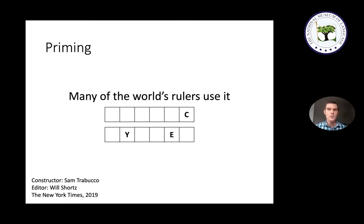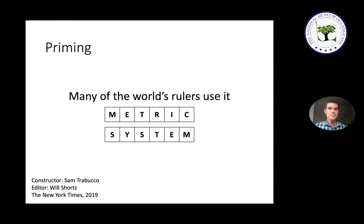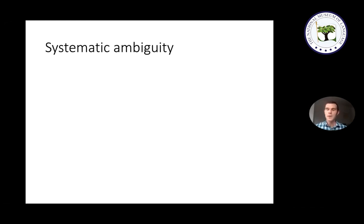Another example of priming is the clue 'Many of the world's rulers use it.' The word 'ruler' is ambiguous between the measuring stick and the leader, and both interpretations are roughly equally common. But the word 'world' early in the clue primes you to expect geopolitically related words, making you more likely to interpret 'ruler' as meaning 'leader.' That's the misdirection — to get the right answer you have to interpret 'ruler' as the measuring stick, giving the answer METRIC SYSTEM.